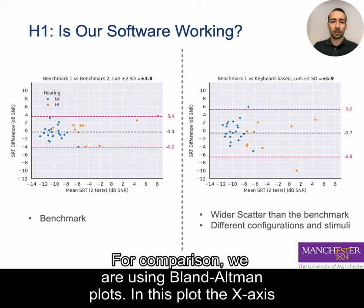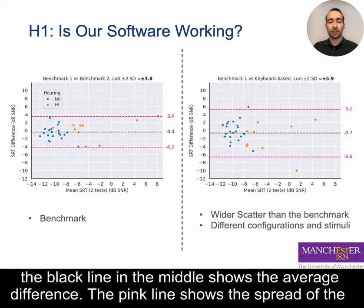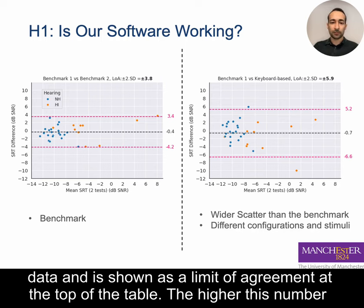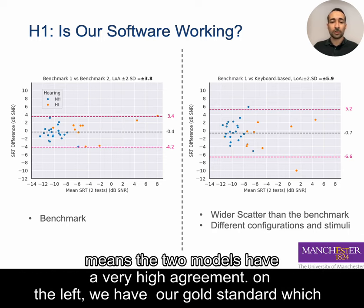For comparison, we use Bland-Altman plots. In these plots, the x-axis shows the mean of the two measurements, the y-axis shows the difference of the two measurements, and the black line in the middle shows the average difference. The pink line shows the spread of the data, shown as the limit of agreement. A higher limit of agreement means less agreement between the two methods; closer to zero means very high agreement.